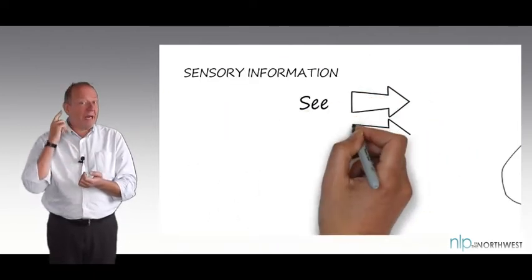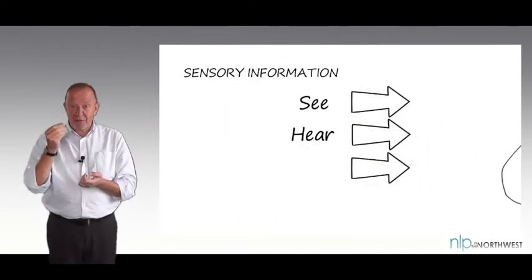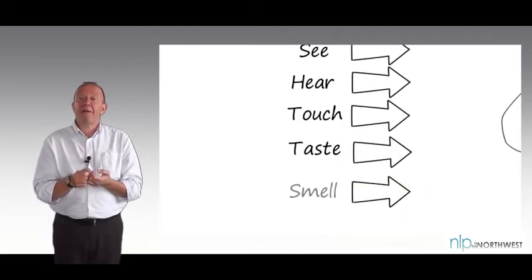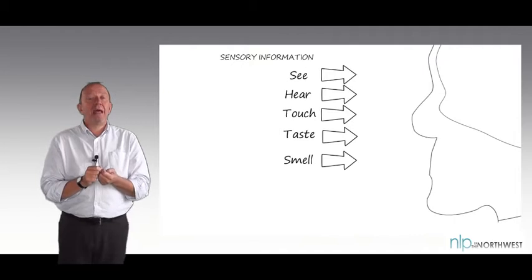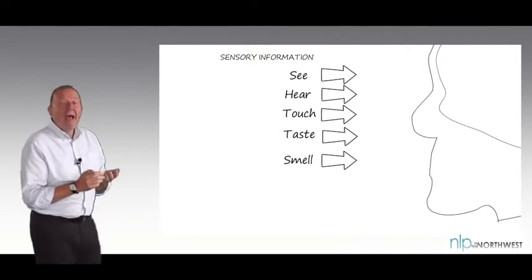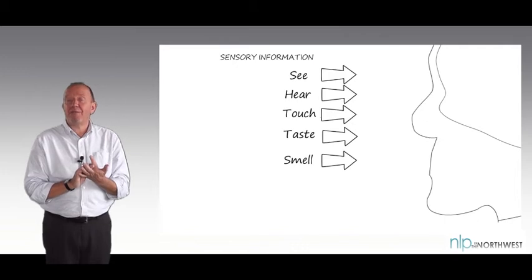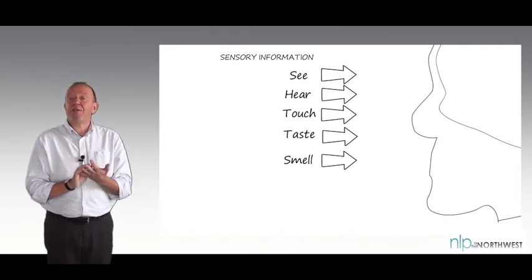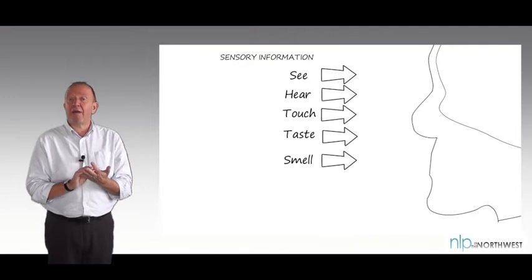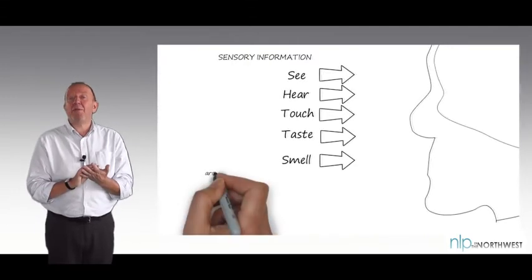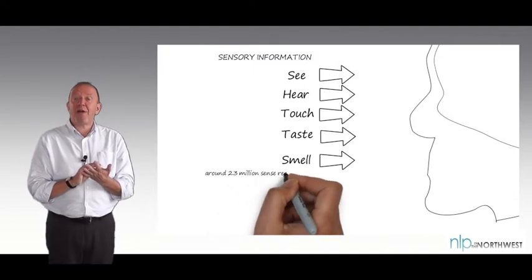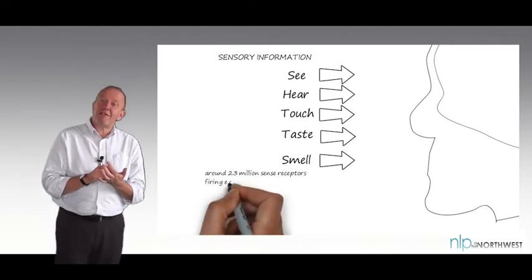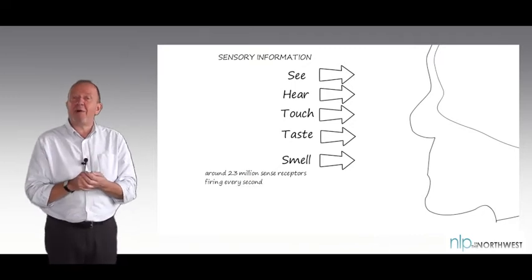We see some things, we hear some things, we feel some things, we taste some things, we smell some things. In NLP terms, the outside world gives us only sensory information, and we are bombarded by it. We are truly astonishing as human beings — we process immense amounts of sensory information second by second. It's estimated that we process something like 2.3 million sense impressions per second, with 2.3 million sense receptors firing off in our body second by second.